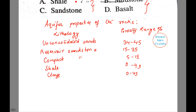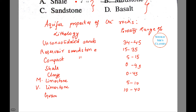Then we have two kinds of limestones. One is massive limestone: 5 to 10 percent. The other is vuggy limestone: 10 to 40 percent. Then we have granite at less than 1 percent, and basalt at 0.5 percent.